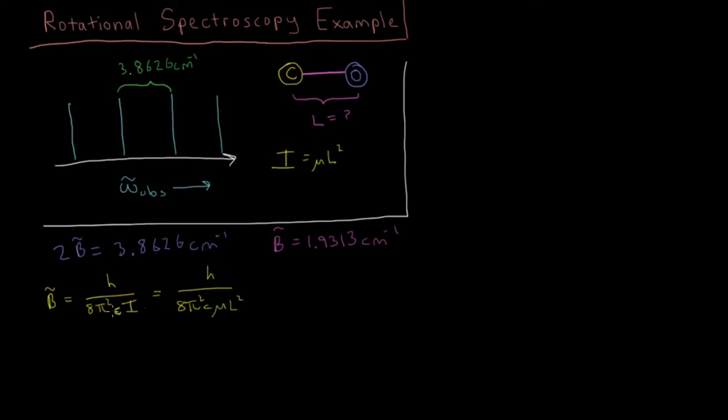So now we want to rearrange this equation to get it to where we have L by itself on the left side here. So you should be able to convince yourself that first we would have L² equals h over 8π²c μ B̄. And so we would take the square root of that to get L. So all we need to do is find all of these values and then take the square root of them and get L.